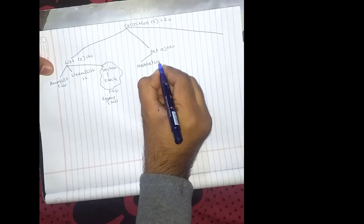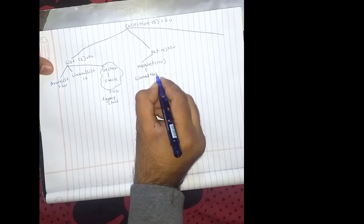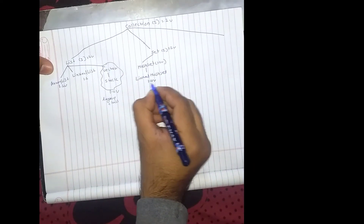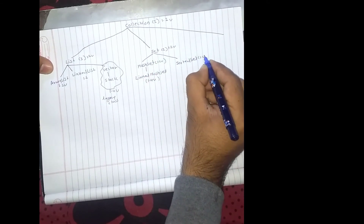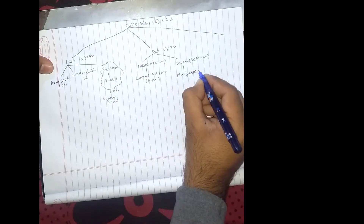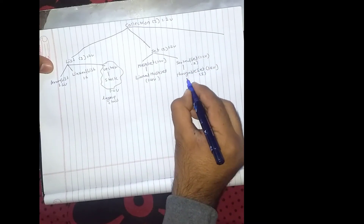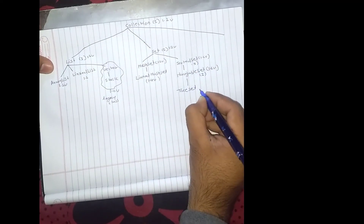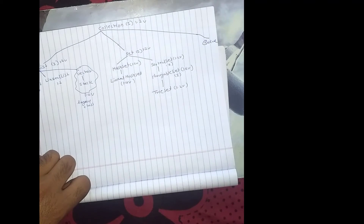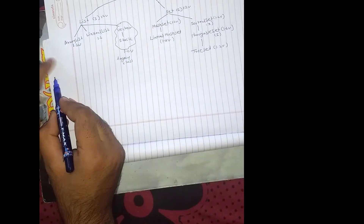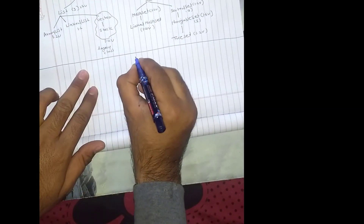The second child interface of Collection is Set. Its implementing classes include HashSet, LinkedHashSet (introduced in 1.4), SortedSet, NavigableSet (introduced in 1.6), and TreeSet (introduced in 1.2). The third child interface of Collection is Queue. After that, we will study about Map.